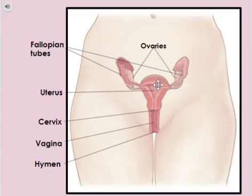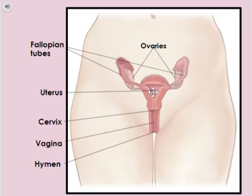The uterus is a pear-shaped organ — it basically looks like a triangle here — which nourishes and holds a developing fetus. And it prepares for pregnancy each month by forming a blood and tissue lining.